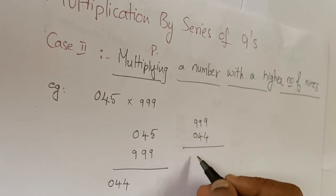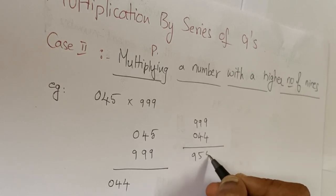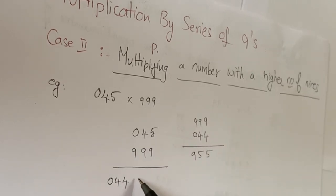So the answer is 44,955. Like this you can multiply in an easy way. Another example: here we have a three-digit number, 123, and we're multiplying with the four-digit nine series.